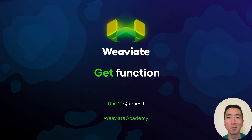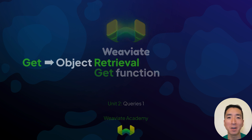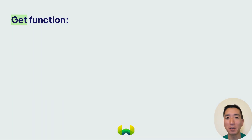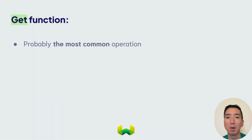Hello, and welcome back to Weaviate Academy. In this section, we're going to dive into the world of the get function. The get function is used to retrieve objects from the object store in Weaviate. Retrieving objects from Weaviate is probably the most common operation to perform for many users.